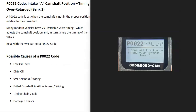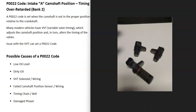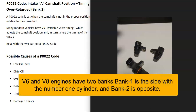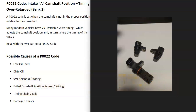Today I'm talking about a P0022 code — what it is and how you go about fixing it. The P0022 code is an intake camshaft position timing over retarded bank 2. There are sensors that track the position of the camshaft and crankshaft as they spin, and the intake A camshaft position sensor is reporting that there's a problem with the timing.